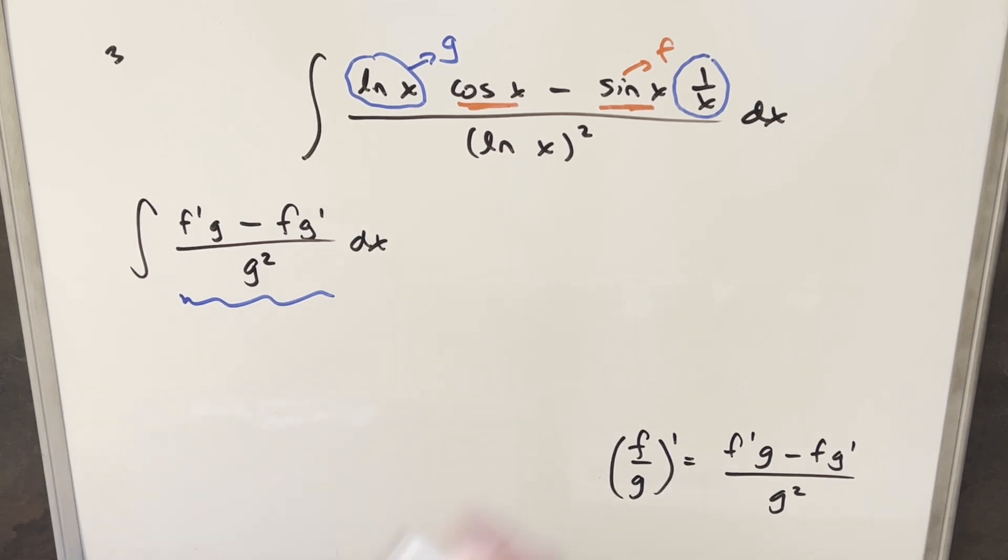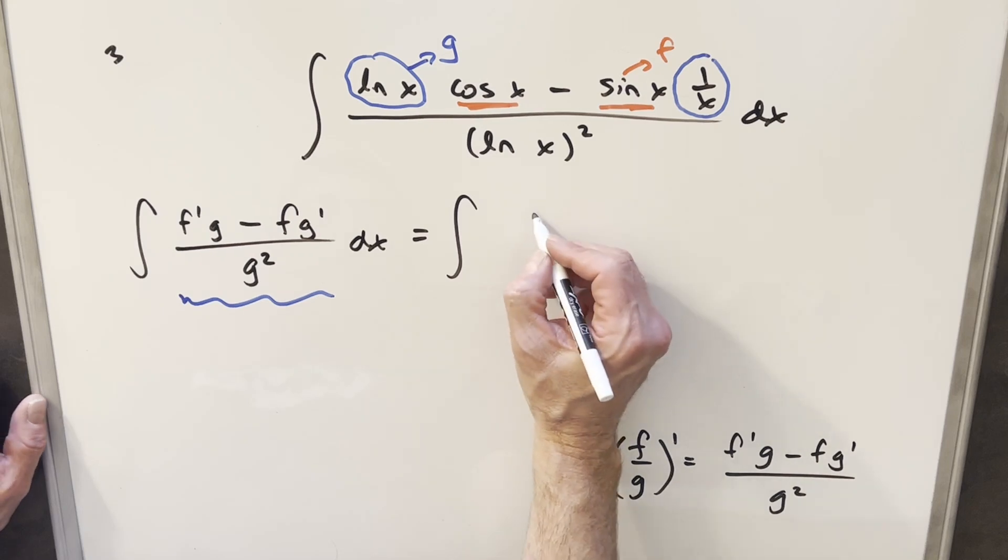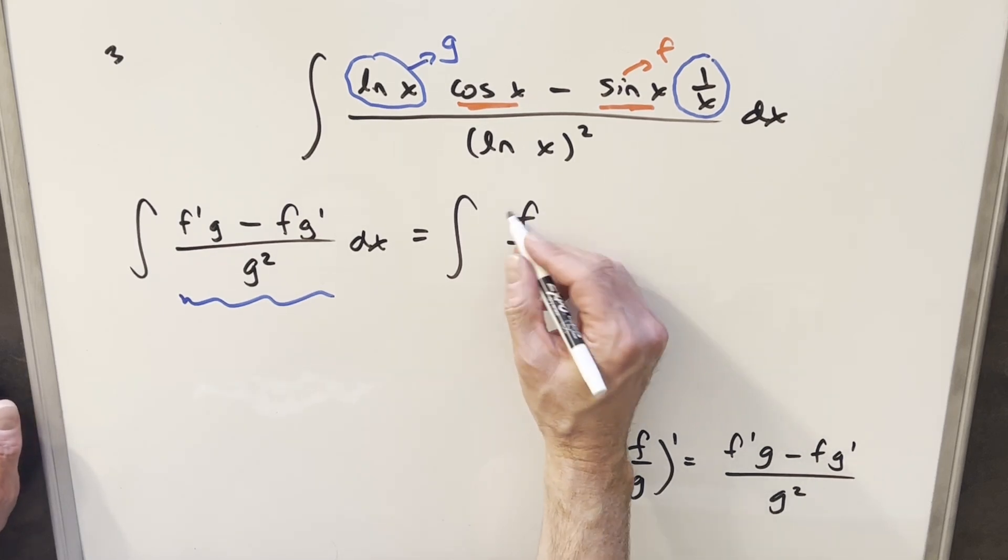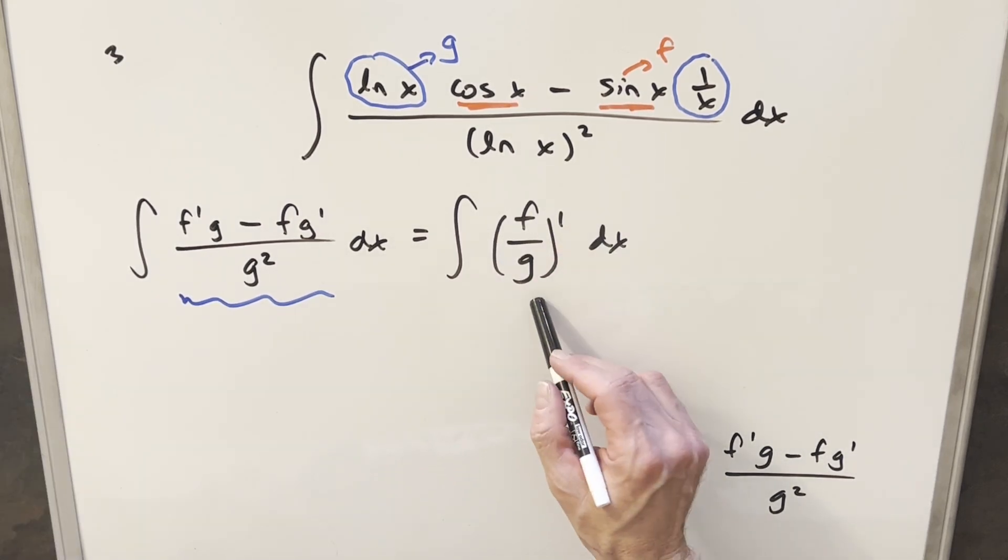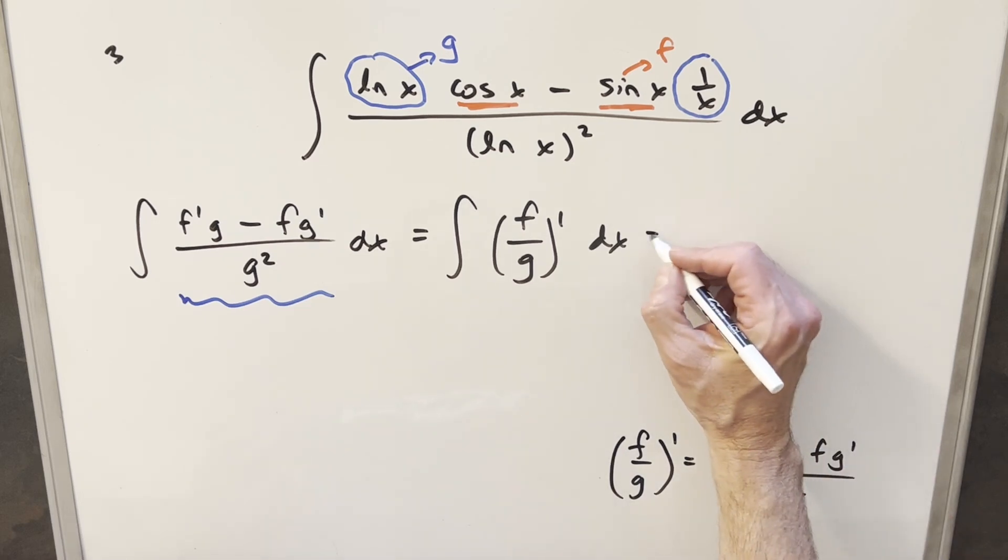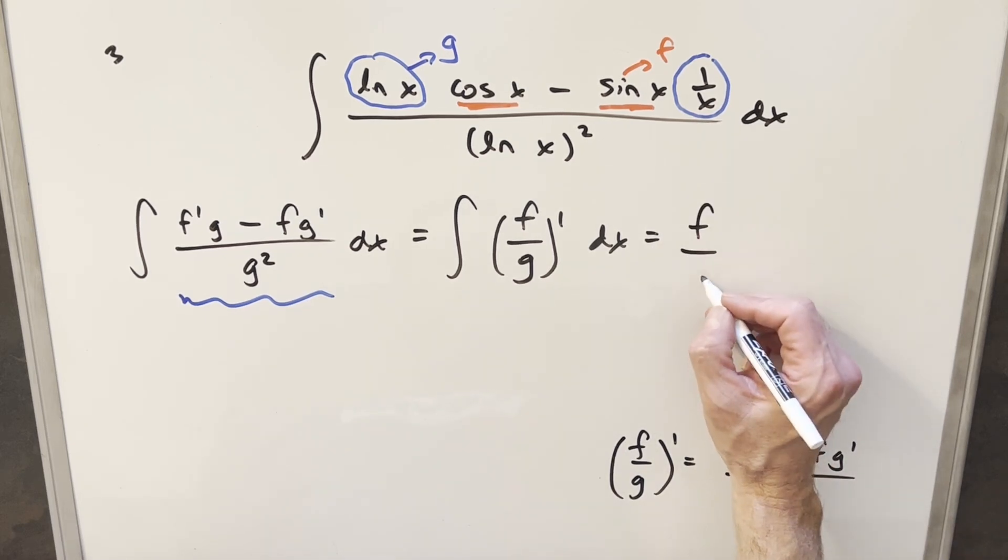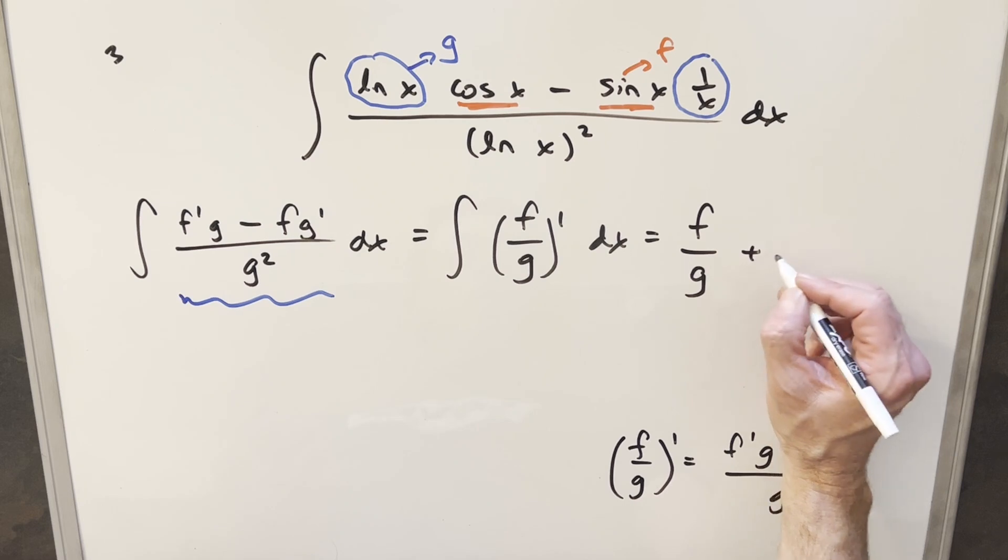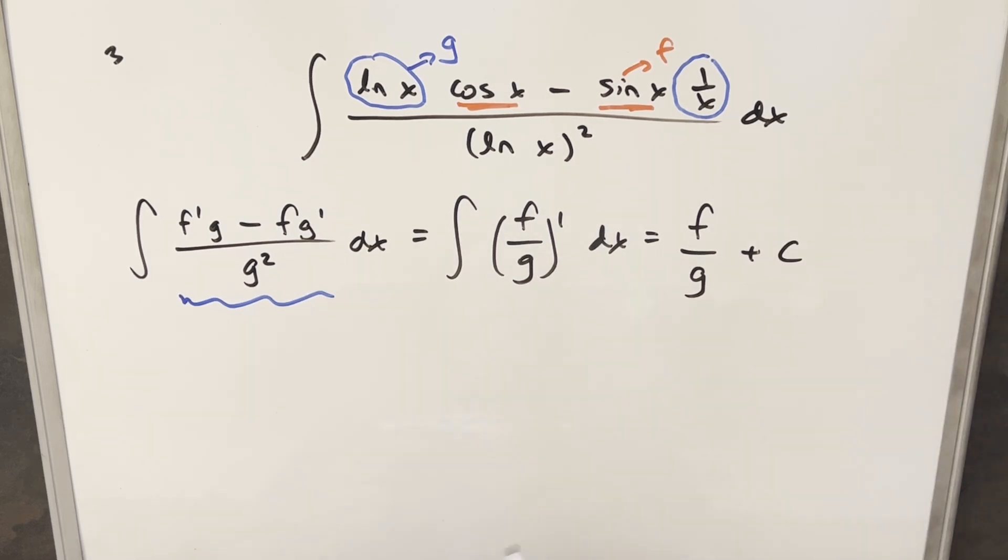So what I can do using this in reverse is I can rewrite this integral. I can write it as f over g prime. But because we have a derivative inside the integral, this whole thing is going to reduce to just f over g plus c. So let's just clarify everything that's happening.